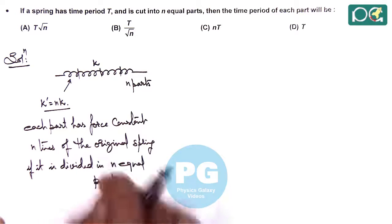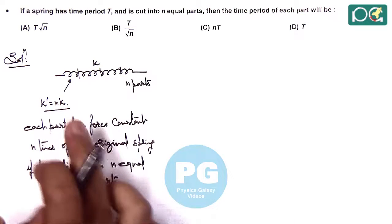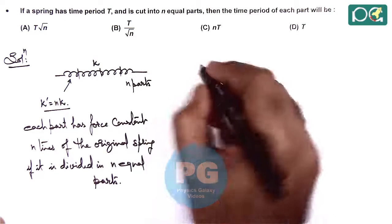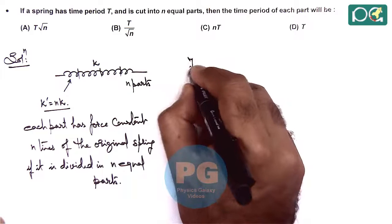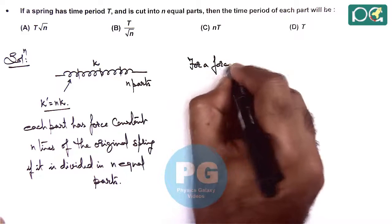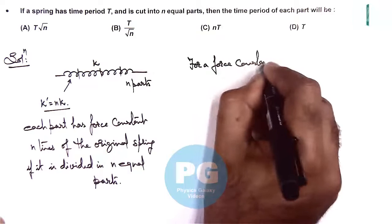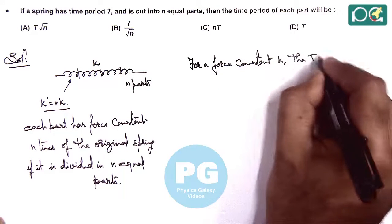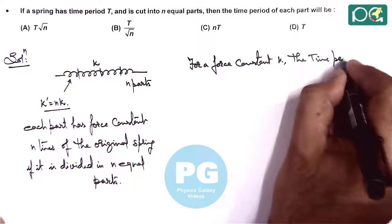Now if we are having an original spring, we can write for a force constant k the time period of oscillation.